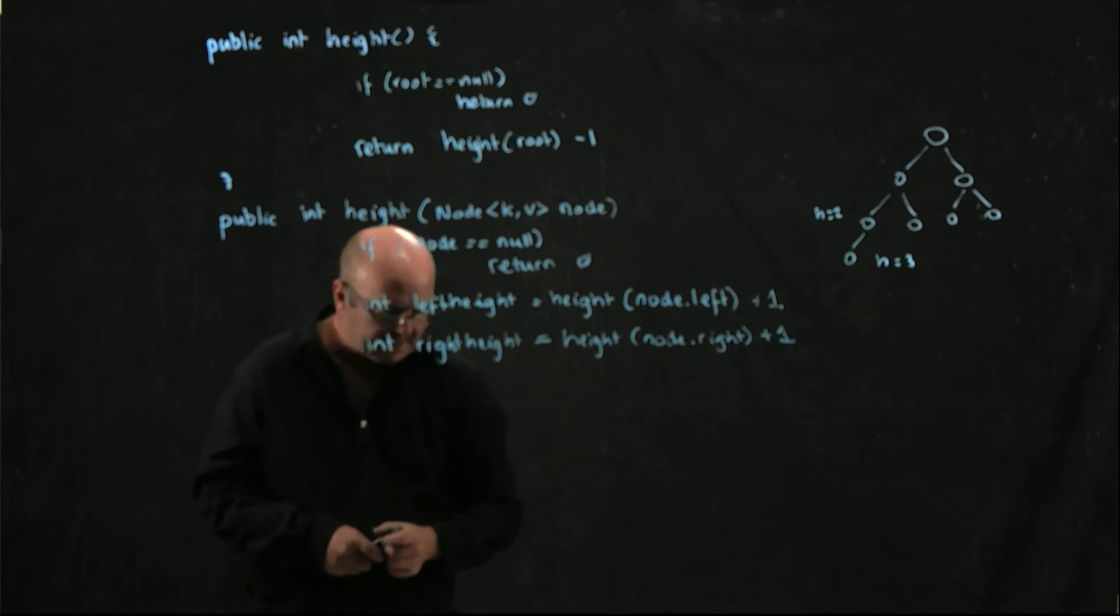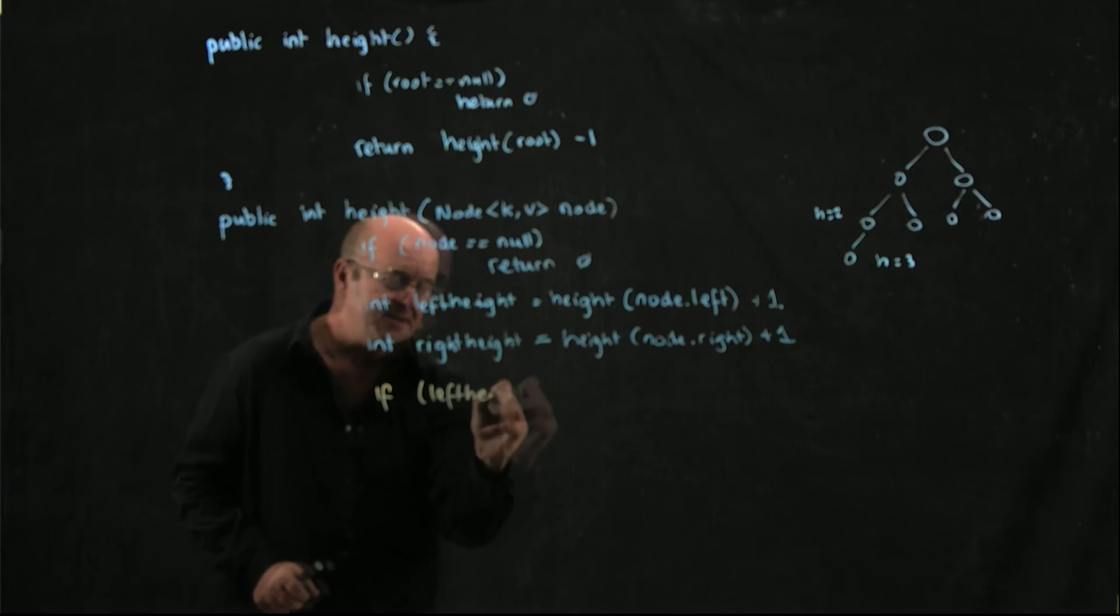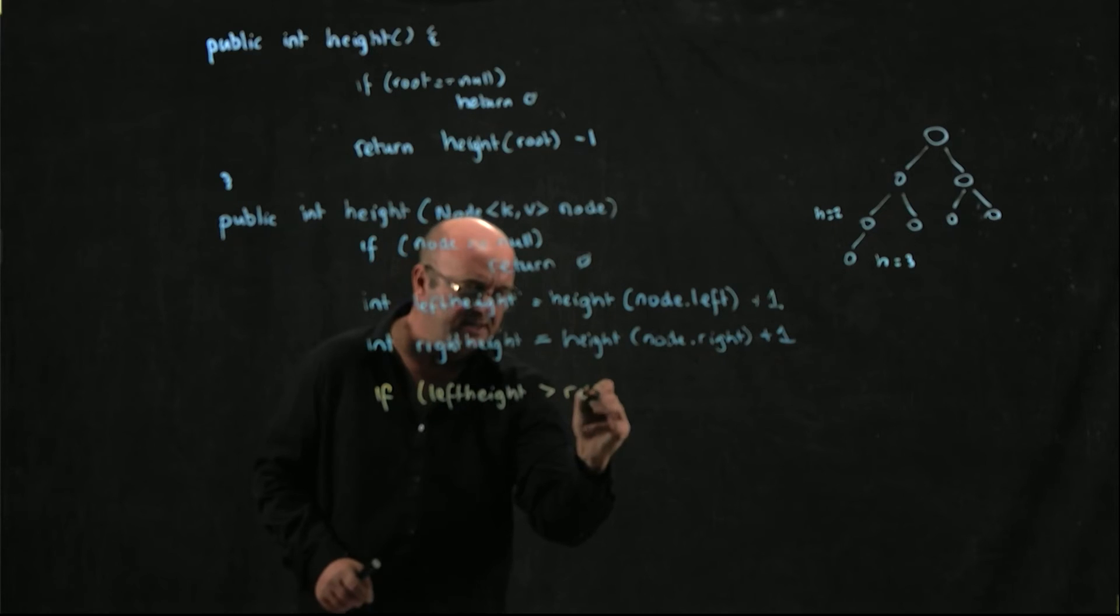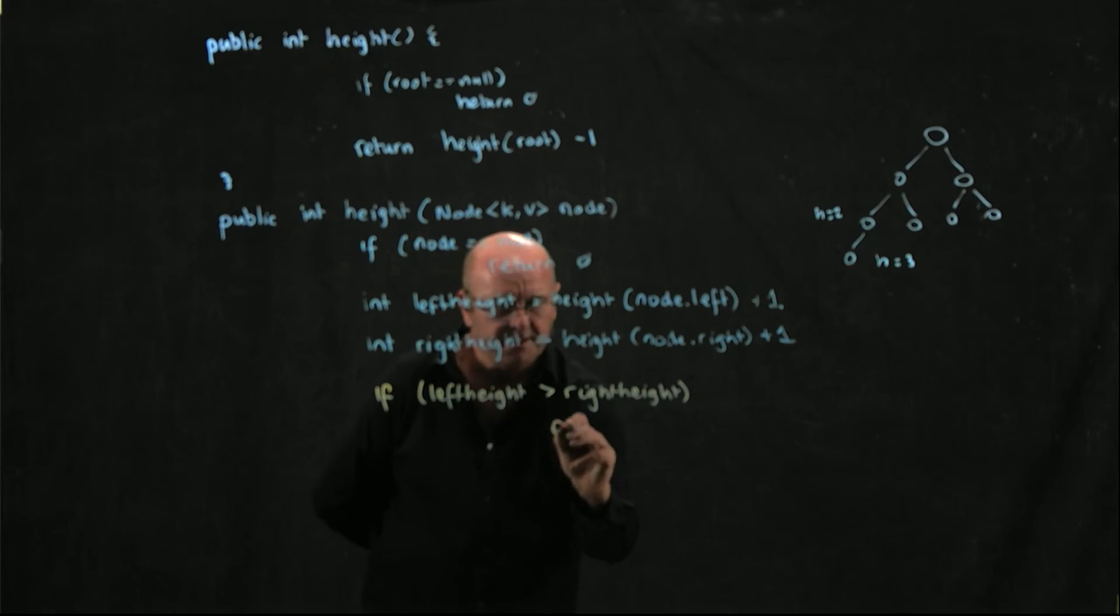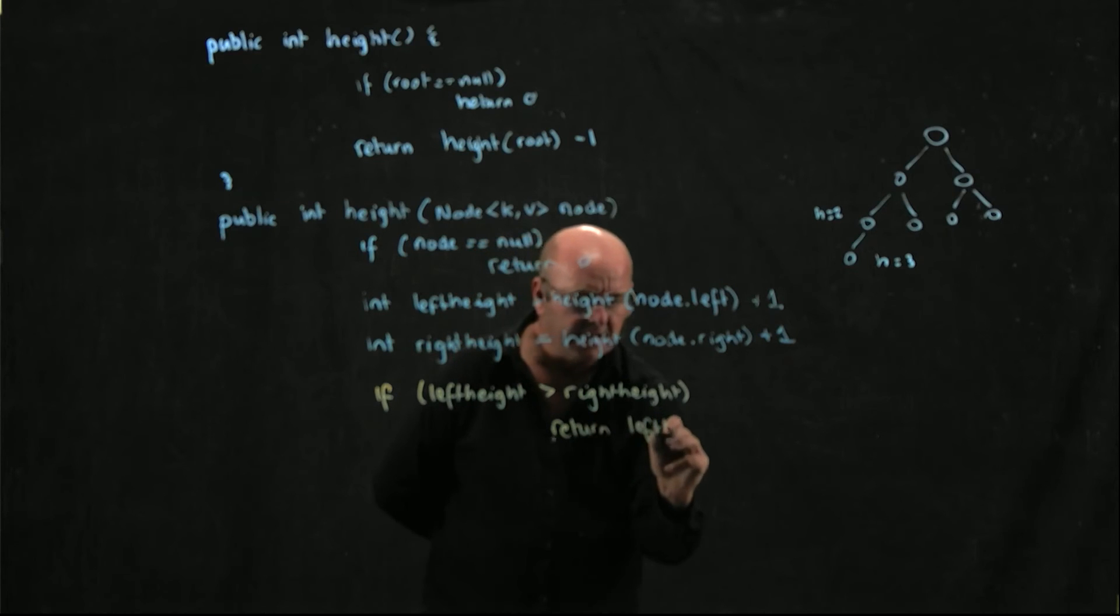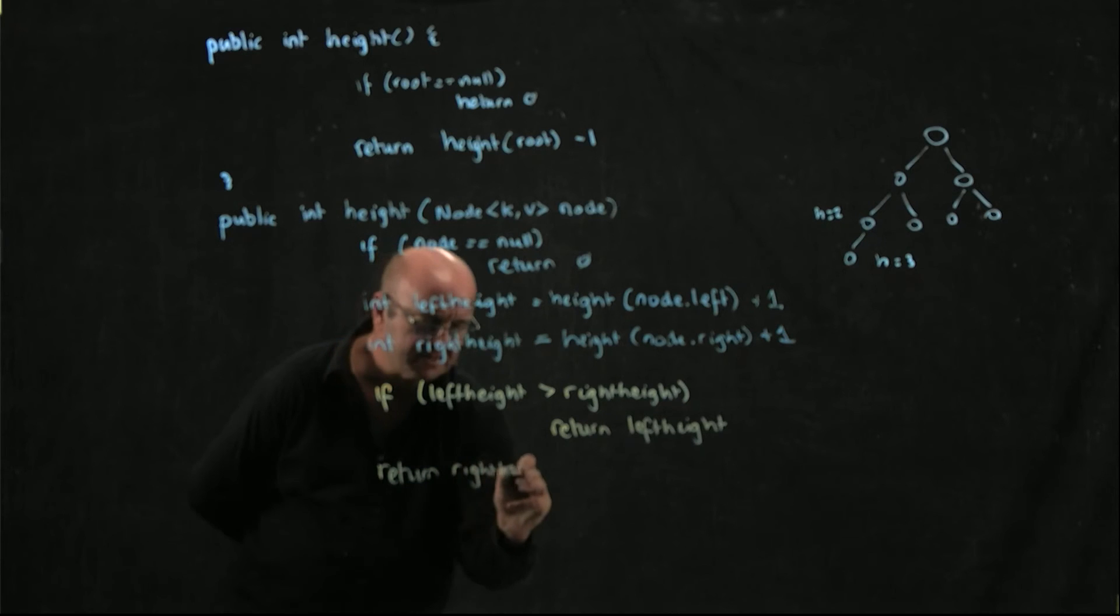And now what I need to ask is if leftHeight is greater than rightHeight, return leftHeight. Otherwise, I'm just going to return rightHeight.